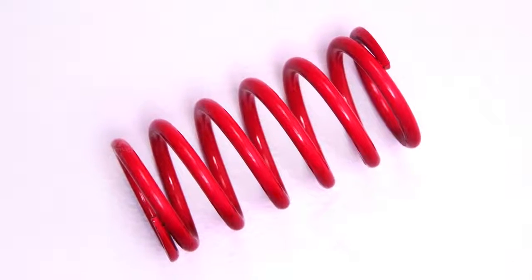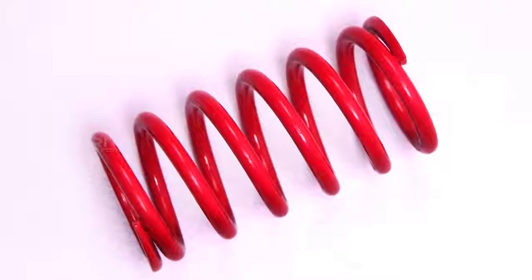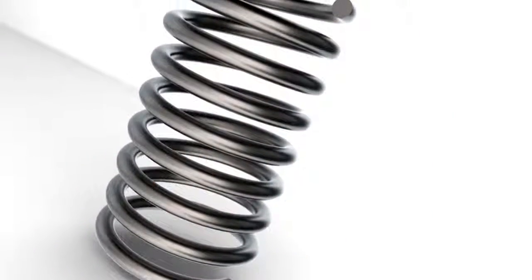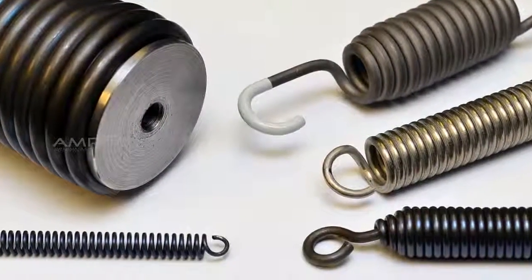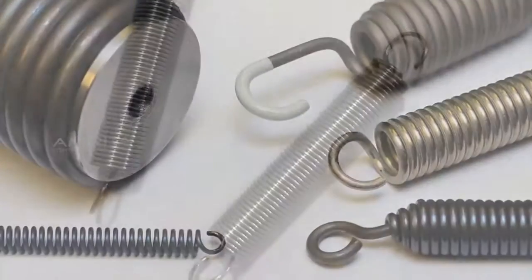Helical Spring. A helical spring is a wire coiled in the form of a helix whose function is to distort when loaded and to recover its original shape when the load is removed.